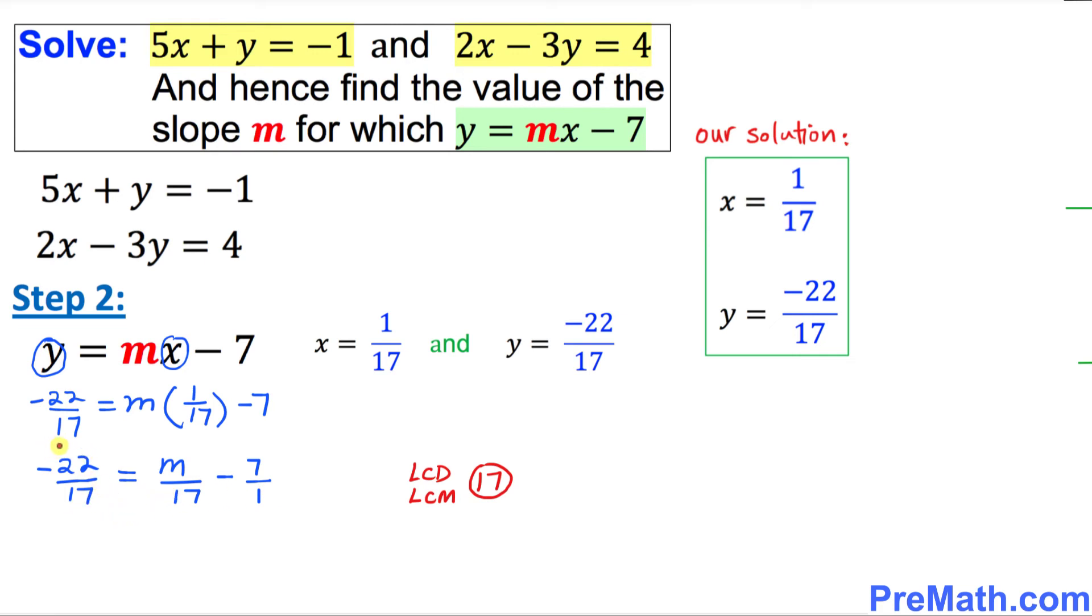And as you can see, our least common denominator, our LCM, is going to be 17. That means I am going to multiply by 17 across the board, each and every term. So this 17 and 17 is gone, this 17 and 17 cancels out, so we ended up with negative 22 equal to m minus 17 times 7 is going to be 119.